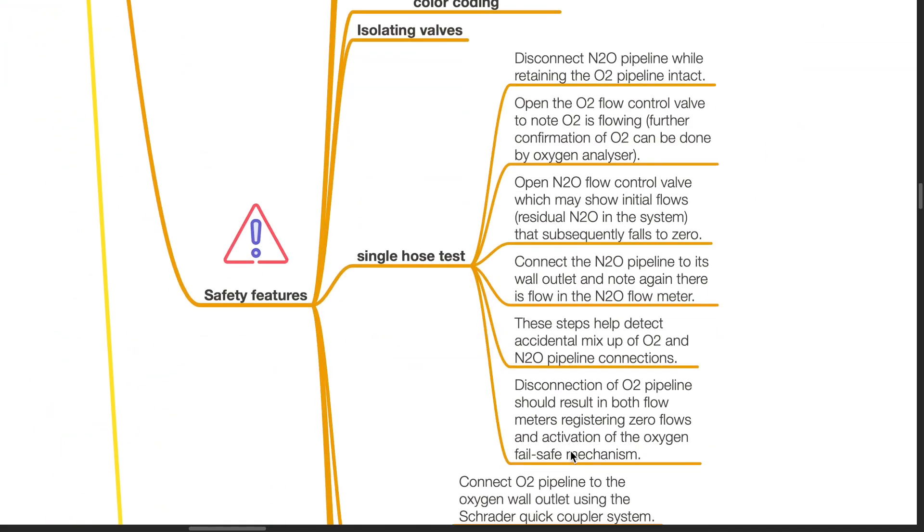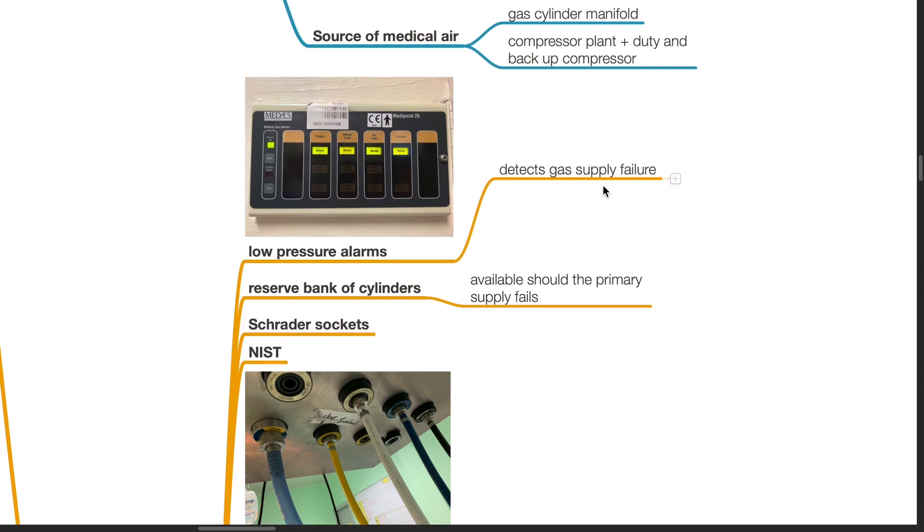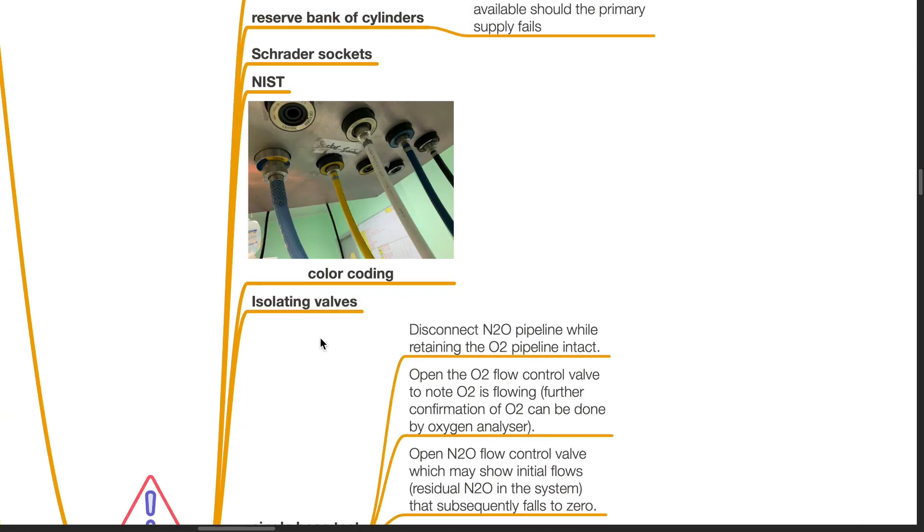Safety features: Low pressure alarms detect gas supply failure. Reserve bank of cylinders should be available should the primary supply fail. Schrader sockets and NIST as mentioned. Color coding. Isolating valves as mentioned.